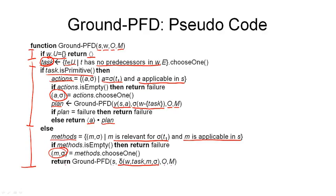So you can see the partial order version of this algorithm is not much more complicated than the total order version. It still consists of the three branches that are given by the definition of a solution for a STN planning problem.